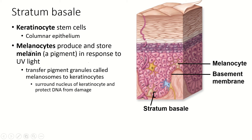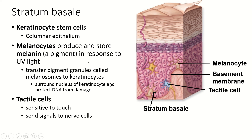Melanocytes produce melanin. 'Cyto' means cell, 'melano' means melanin — so these are melanin-producing cells. Melanin is a pigment with a brownish tone. There are actually several types of melanin, but we'll treat it as one thing. What melanocytes do is make melanin, put it in granules or vesicles that are released from the cell, and those then travel to other cells. We'll come back to that in a moment.